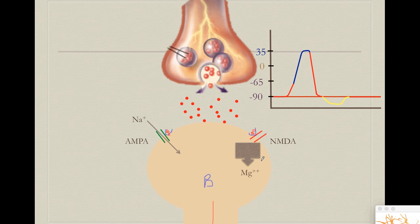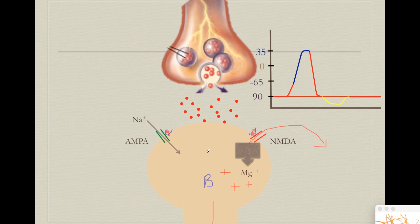What do we need to unblock the NMDA receptor? When we release glutamate and activate AMPA receptors, all of these positively charged sodium molecules will expel the magnesium that acts as a cork for the NMDA channel. All of this first depolarization of our neuron — when it reaches around +35 mV — means there are many positively charged ions, and magnesium, since it is also positively charged, gets expelled.